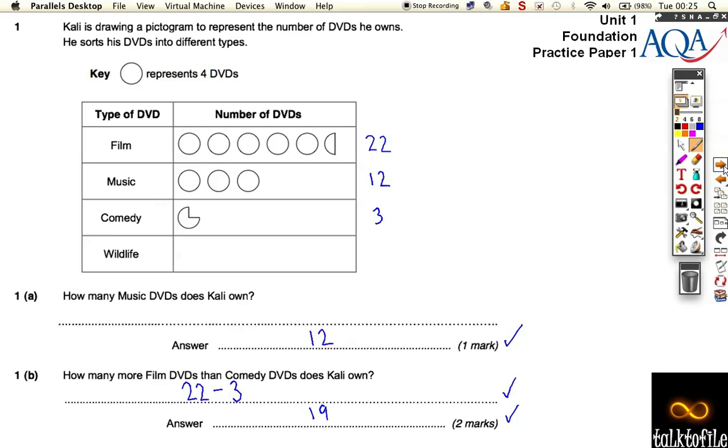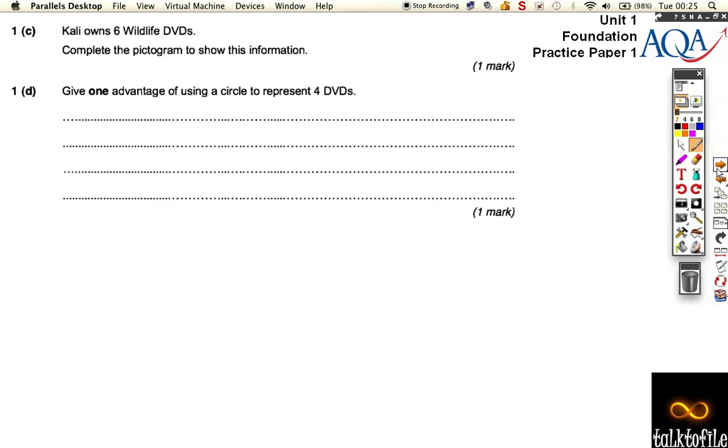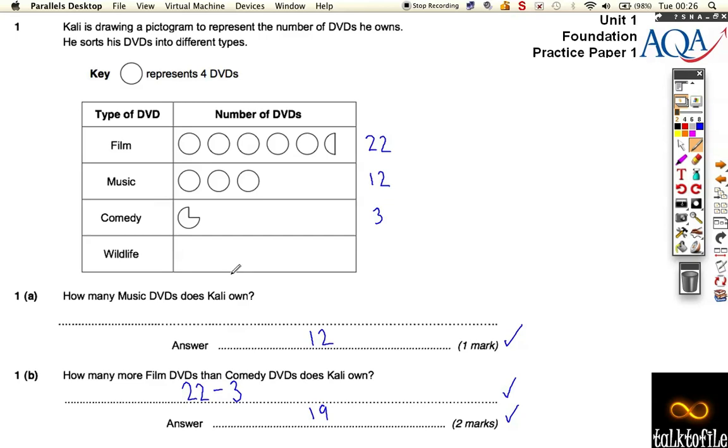Okay, let's turn the page. You'll find the question carries on underneath, I couldn't fit it onto my screen. And now it says Kali owns six wildlife DVDs, complete the pictogram to show this information. Well, let's go back to the pictogram now, we've got to do six. Okay, so let's draw one whole circle. It doesn't matter how, as long as the diagram is close enough. It's not the best circle ever.